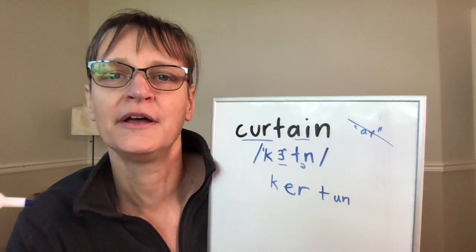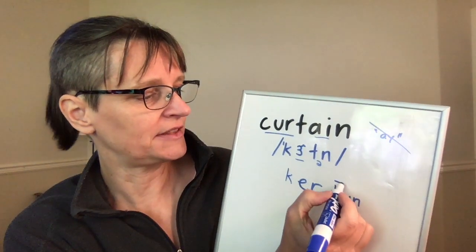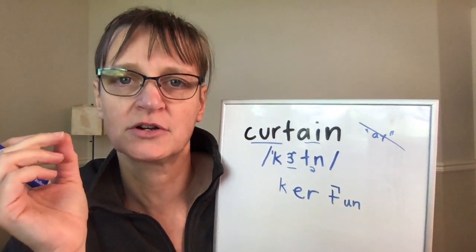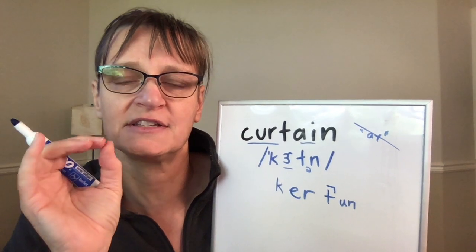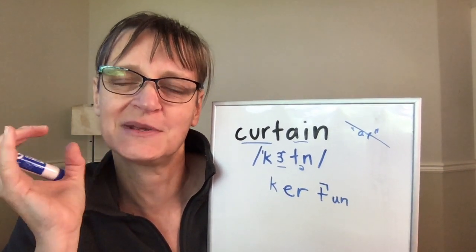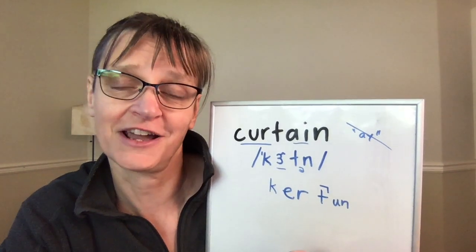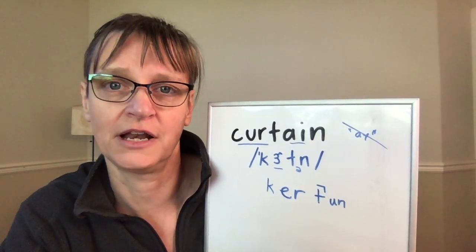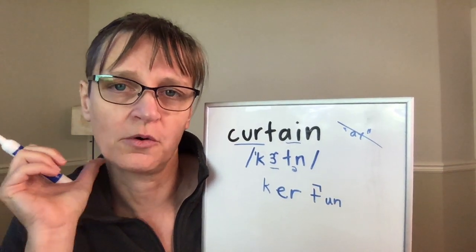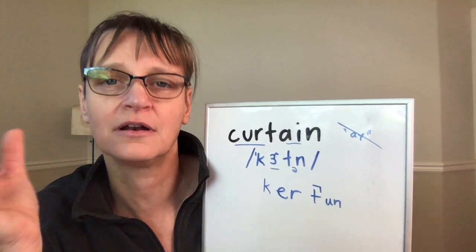The other thing with the word 'curtain' — the way most Americans will say it is that they are going to stop that T. They're not going to say 'curtain' with a pronounced T sound or 'curtain' with a flap T. It's going to be a stop T, which means you won't really hear the T sound. But I can't leave it out entirely — that would sound like 'curran.' So I have to stop the air with my tongue or further back in my mouth to mark that T sound. Curtain.